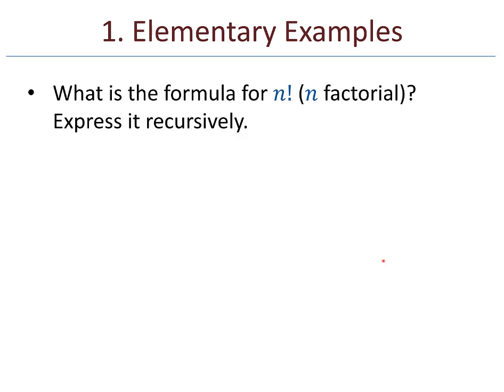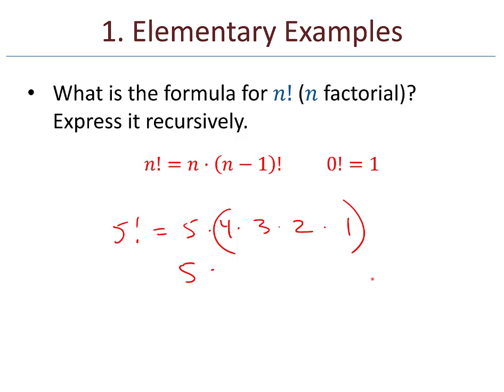Here are some elementary examples. What is the formula for n factorial? So we want to express this recursively. Well, 5 factorial, for example, is 5 times 4 times 3 times 2 times 1. That's really just 5 times 4 factorial. So, in general, n factorial is n times (n minus 1) factorial.